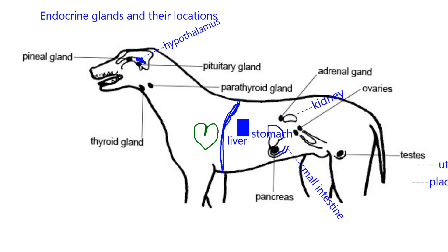I want to point out the ovaries — these two structures here, shown as black dots — and the spelling is further away. Those are endocrine organs. Then, connected to the ovaries, is the uterus. The uterus in some animals makes hormones.